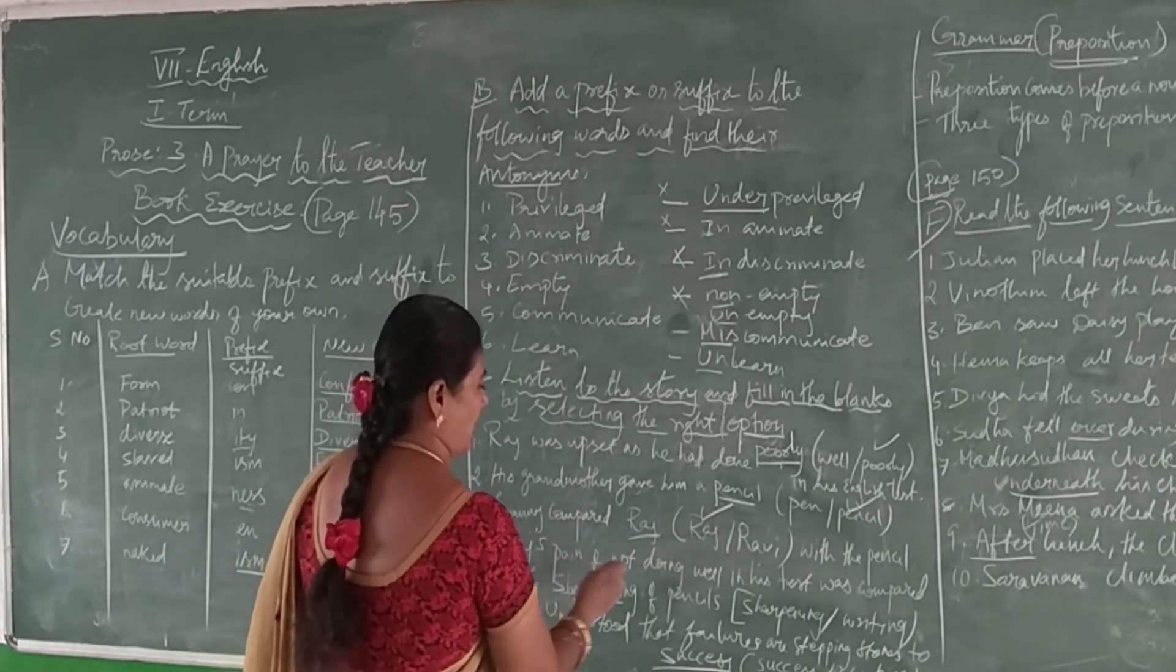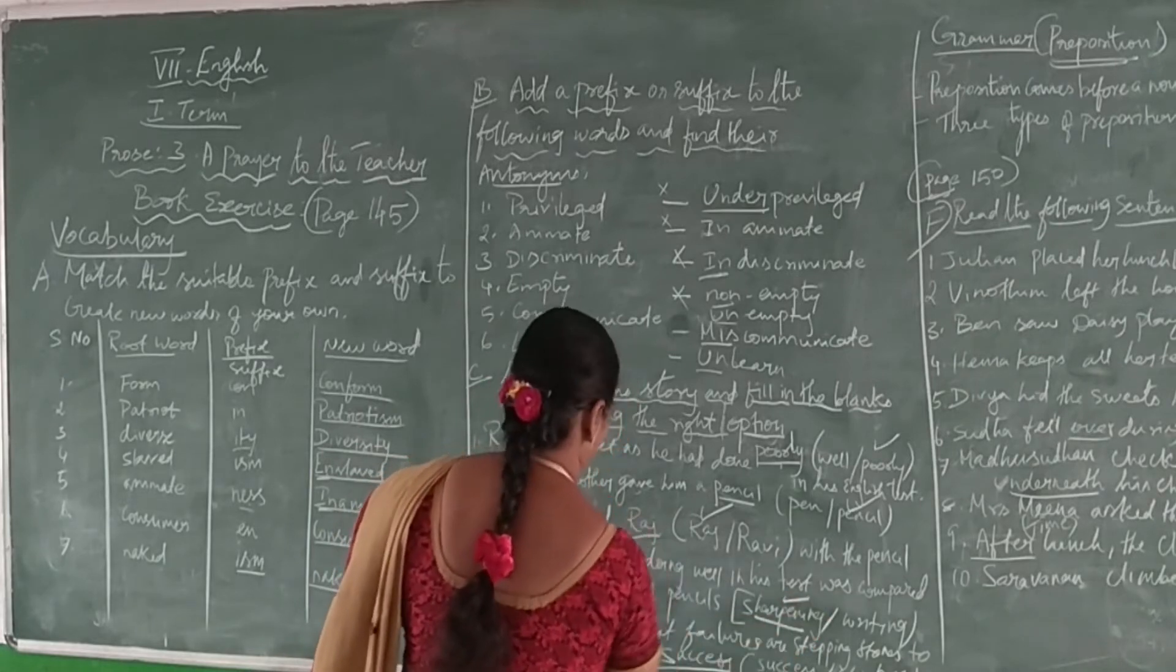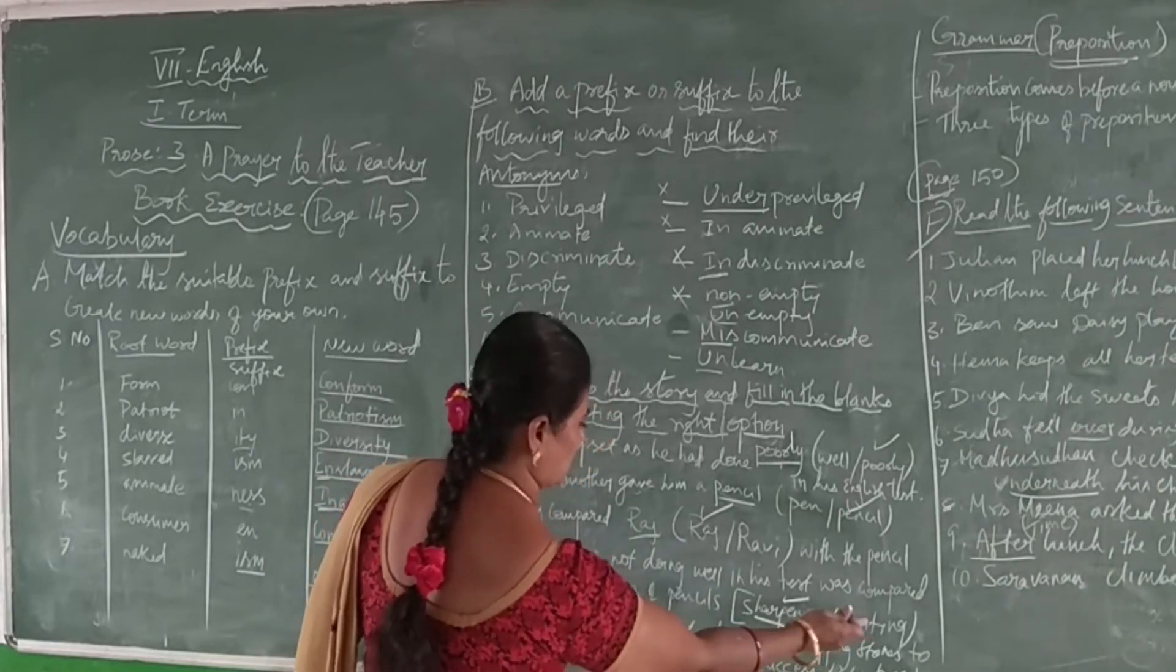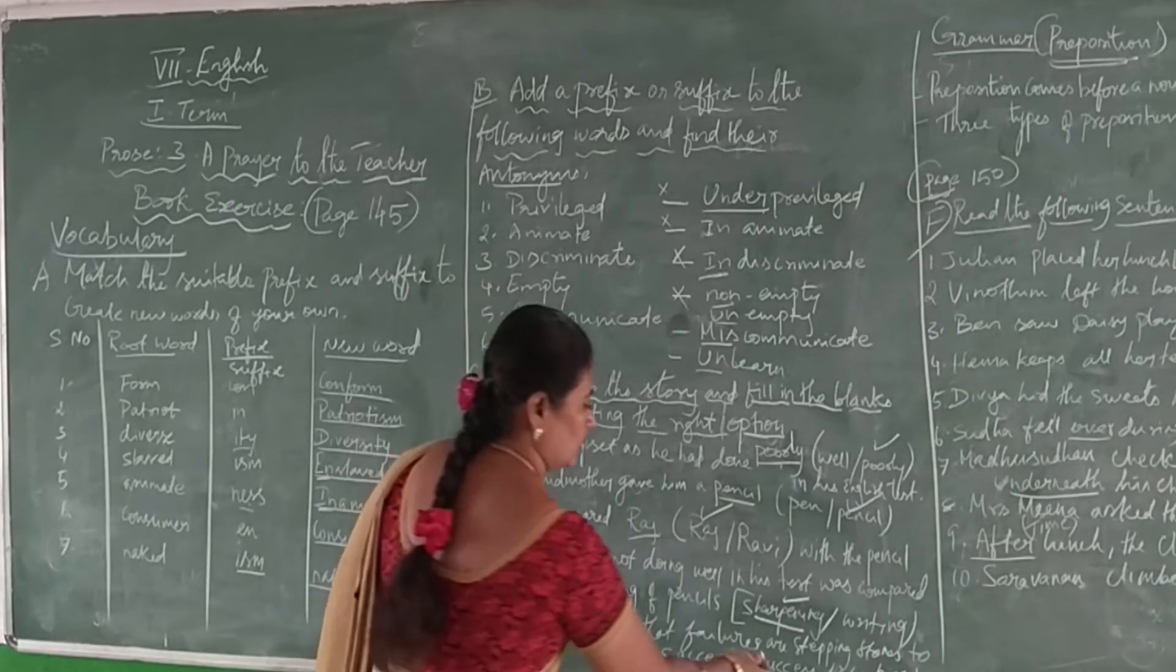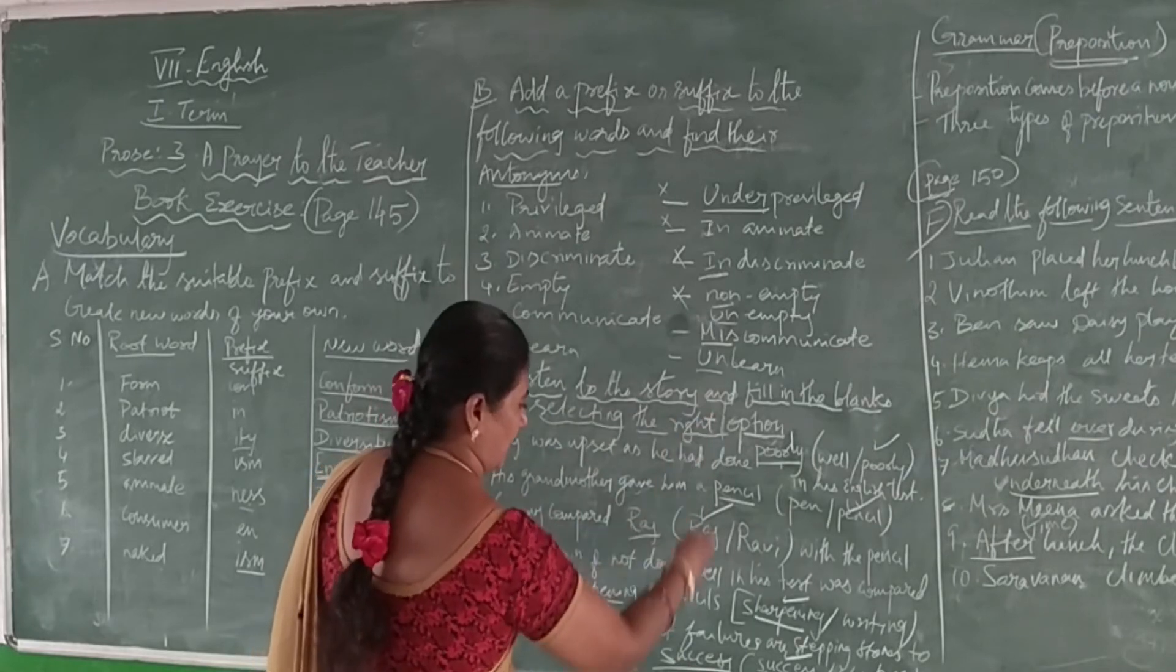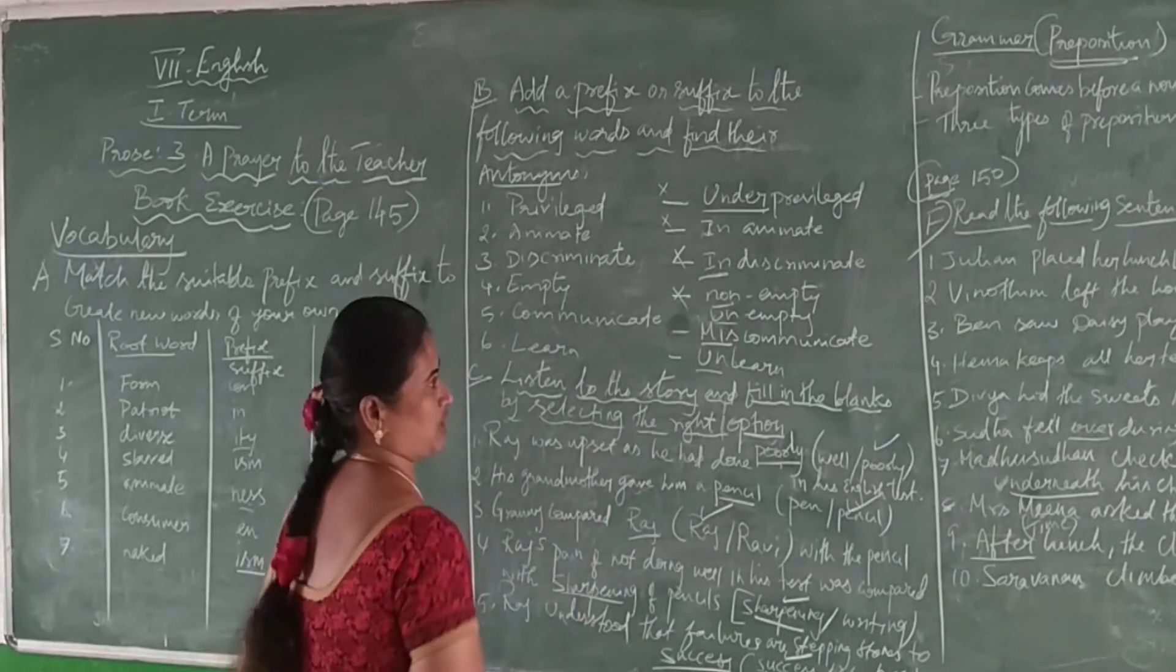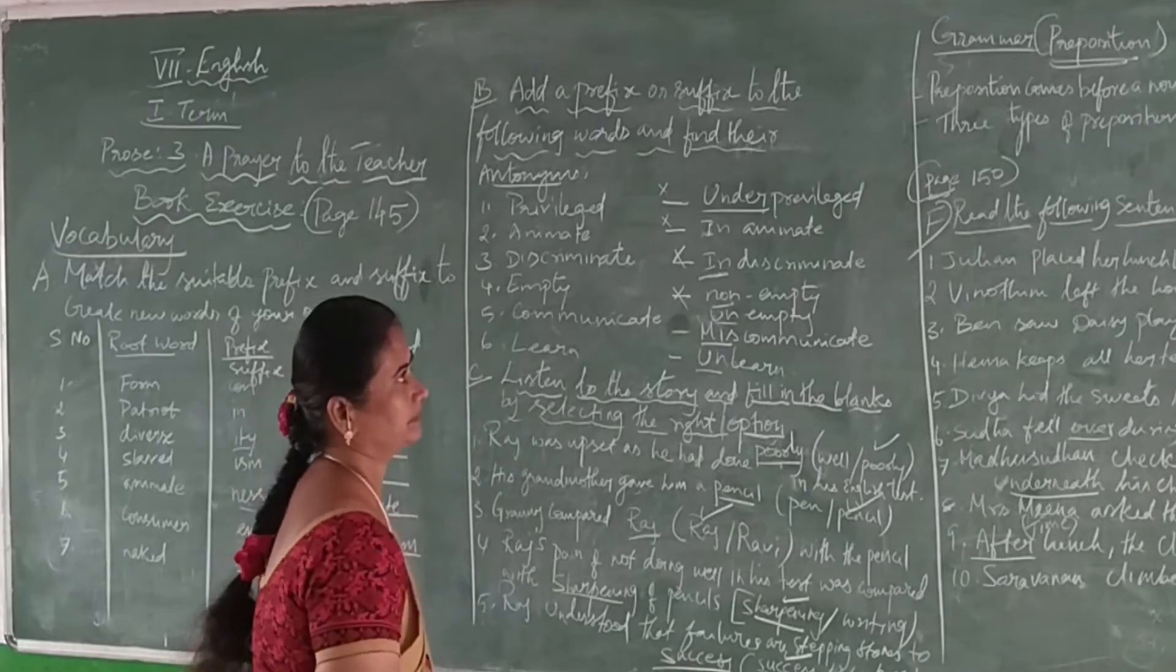That is, Rauch was upset and is not angry - because of the shortening. Rauch understood that failings are the stepping stones to success. So by this, you have to understand the story and then pick up the correct answer. You have to fill these actions. By this you have completed Exercise 3.